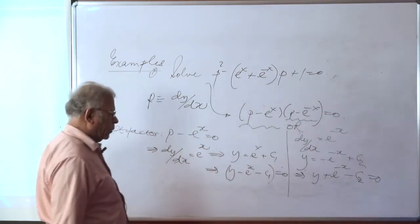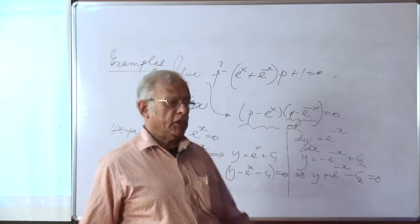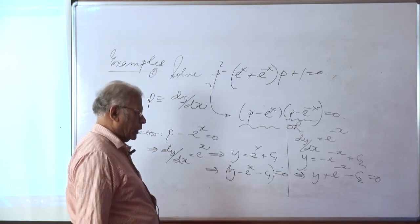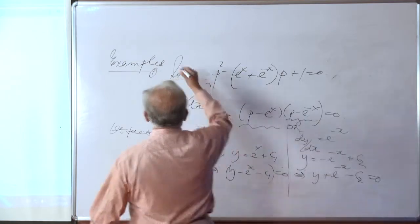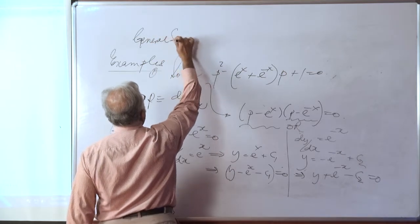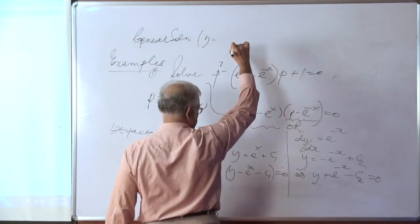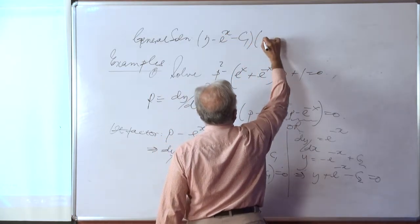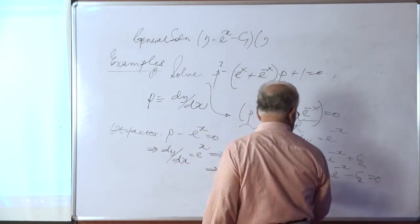This gives us y + e^{−x} − c₂ = 0. For the original equation, the product of these two solutions equated to 0 is the most general way of writing the solution. The general solution is therefore (y − e^x − c₁)(y + e^{−x} − c₂) = 0.